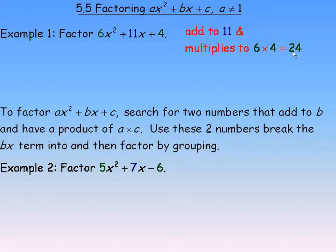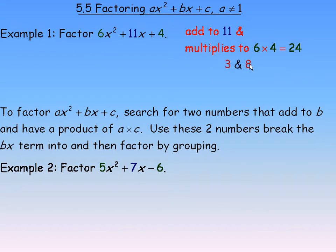There are lots of factors of 24. For example, 1 and 24 don't add to 11. 6 and 4 multiply to 24, but again they don't add to 11. The numbers that we need are 3 and 8. They multiply to 24 and they add to 11.